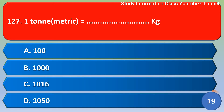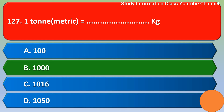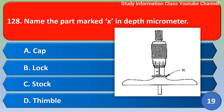Next question: One metric ton is equal to how many kilograms? Option A: 100 kg, Option B: 1000 kg, Option C: 1016 kg, Option D: 1050 kg. The correct answer is Option B — 1000 kg.